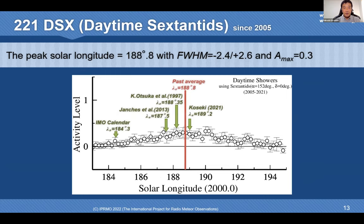As an example of long-term study, this figure shows the characteristics of the daytime meteor shower 221 DSX for the period 2005 to 2021. The peak occurred at solar longitude 188.8 degrees. This result is later than the IMO calendar, but it is similar to those of recent studies. IPRMO will continue to observe and analyze 221 DSX.